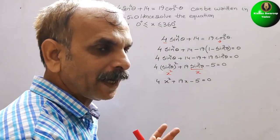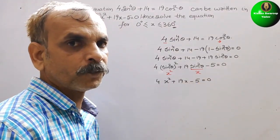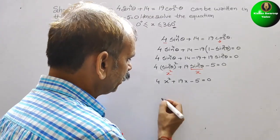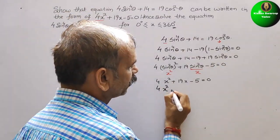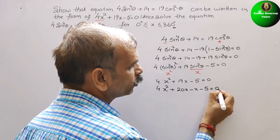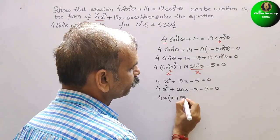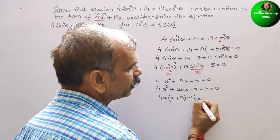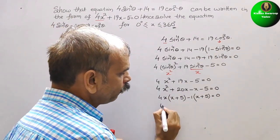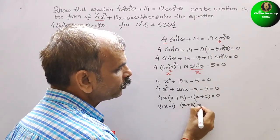Now we have to solve this by splitting it. 4 × 5 = 20, and 20 − 1 = 19. So here it will be 4x² + 20x − x − 5 = 0. In the first two terms, 4x is common, giving x + 5. In the last two terms, −1 is common, also giving x + 5 = 0.